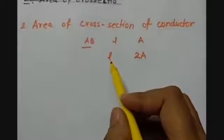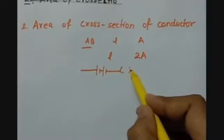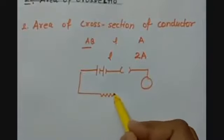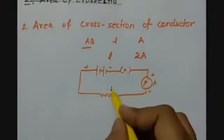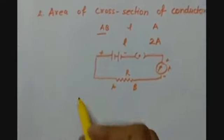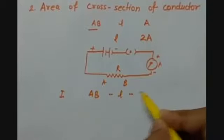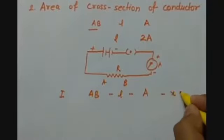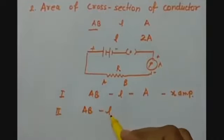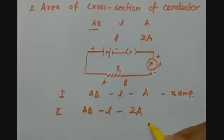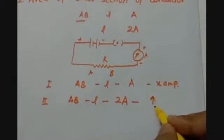What will happen to the resistance of the conductor? With the same circuit having a battery, a key, an ammeter, and the conductor — in the first case, AB of length L has a cross-sectional area A, and X ampere current is flowing. In the second case, when AB has the same length L but the cross-sectional area is doubled, the current which flows is increased. This is what happens when we perform the experiment.